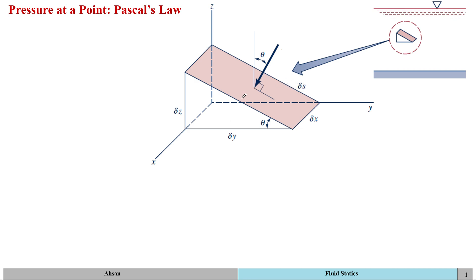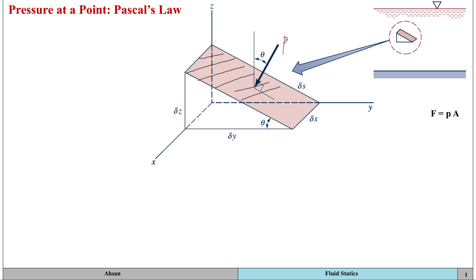Now we look at the forces acting on this fluid element. We know that force equals pressure times area. The force acting on the slanted face in that direction — let's call it Ps — so the force is Ps times the area of that face, which is delta x times delta s.